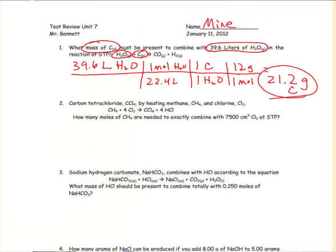Now what does that mean? That means if you start with 39.6 liters of water in this chemical reaction, you need 21.2 grams of carbon to completely react with it.